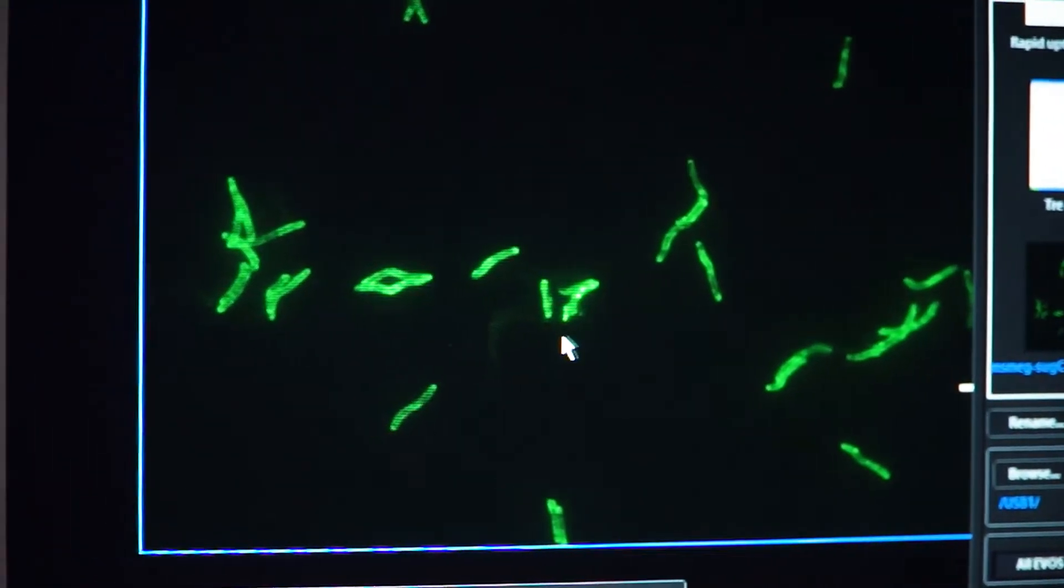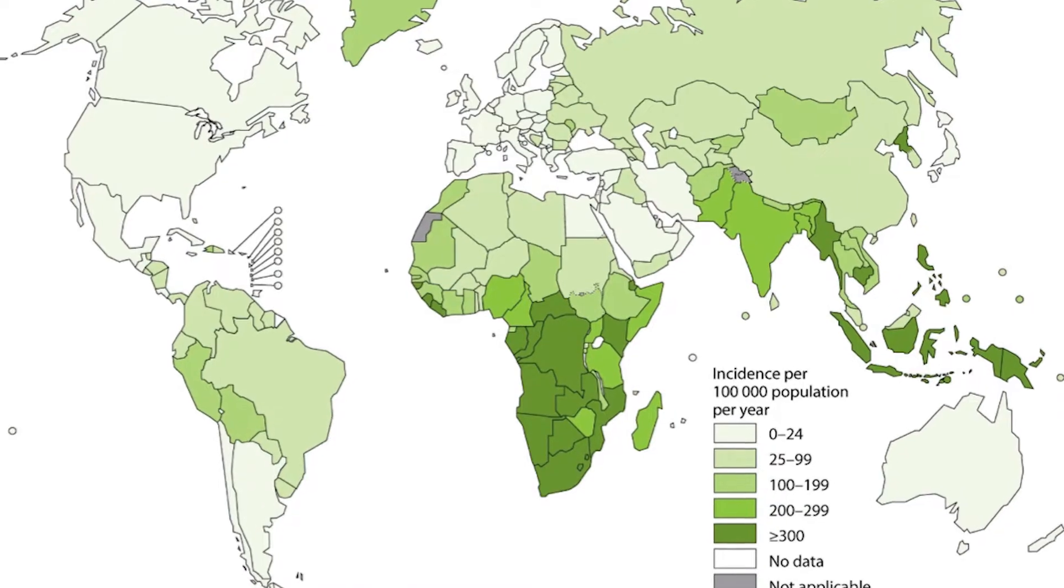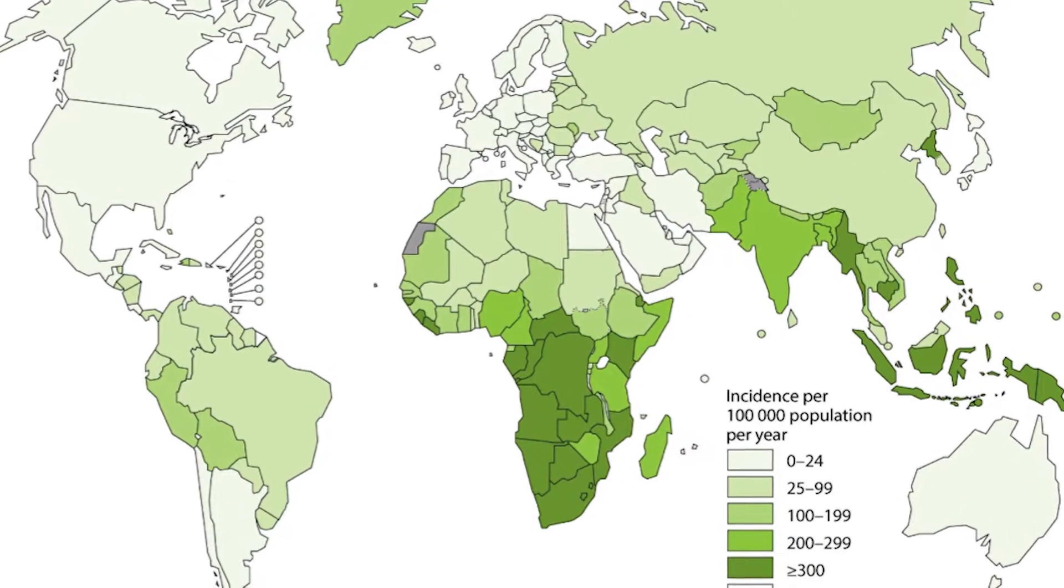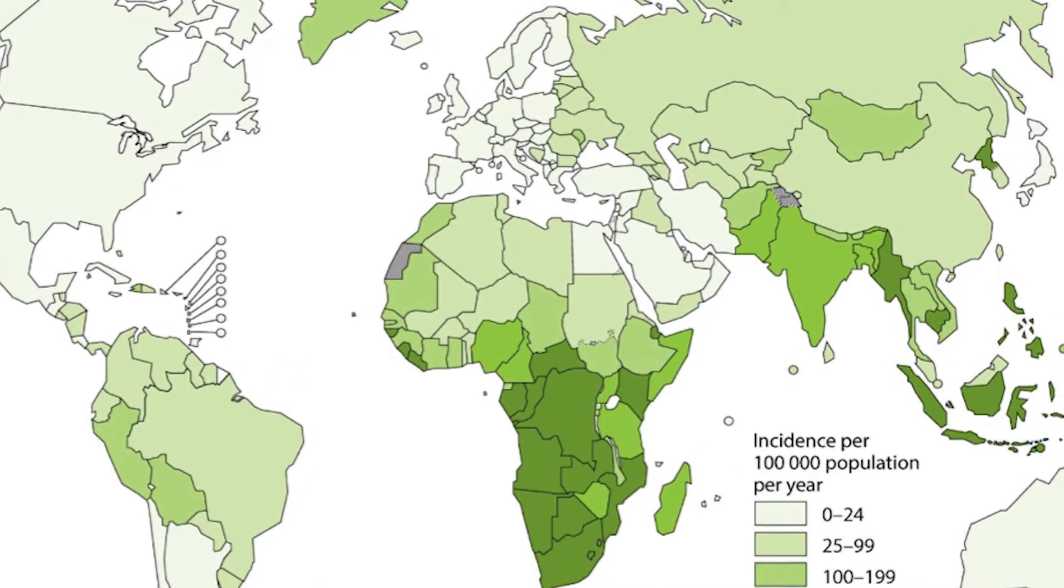Tuberculosis is an extraordinarily widespread disease. Over a quarter of the world's population harbors dormant tuberculosis and every year millions of people are afflicted by the active form of the disease.